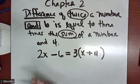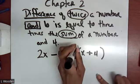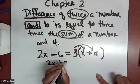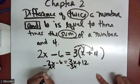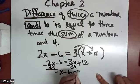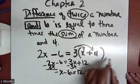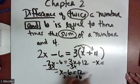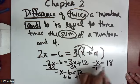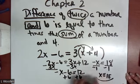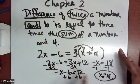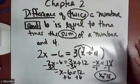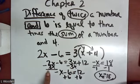Distribute to get 2x minus 6 equals 3x plus 12. Moving the variable to the left: negative x minus 6 equals 12. Then negative x equals 18; divide both sides by negative 1, giving x equals negative 18. You can solve however you solve, as long as you keep the problem balanced — whatever you do to one side, do to the other.